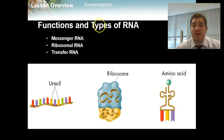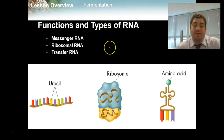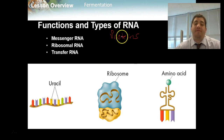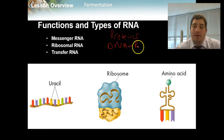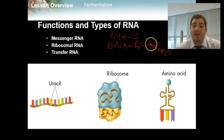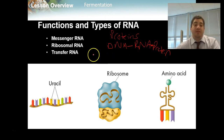So now we're going to start talking about the functions and different types of RNA. RNA can actually have a variety of functions, but the most important and most common one is that it's used to make proteins. And this goes back to the central idea of biology that we talked about, which is DNA to RNA to protein. The DNA makes a copy — this is the master plan — makes a copy into a blueprint called RNA, which then goes and turns into protein.